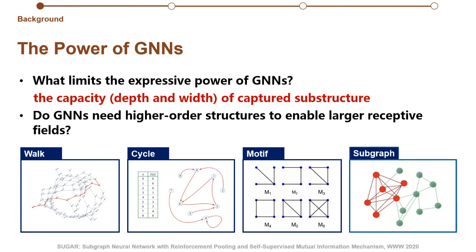Graphs have many substructures, ranging from node-walk, cycle, motif, to subgraphs. The local substructures in a graph always contain vital characteristics and prominent patterns. The capacity of captured substructures limits the expressive power of graph neural networks. So it's definite that graph neural networks need higher-order structures to enable larger receptive fields.